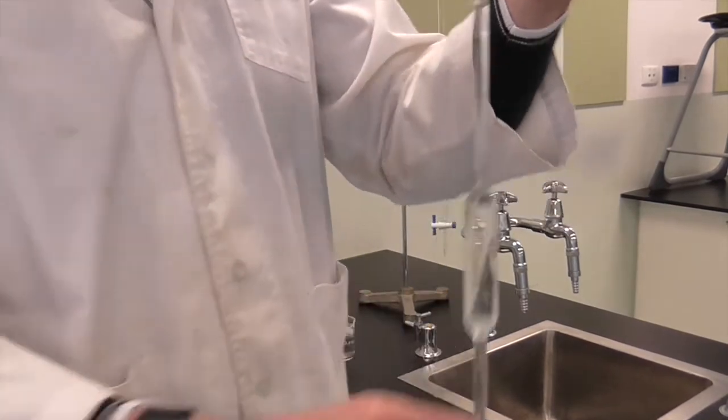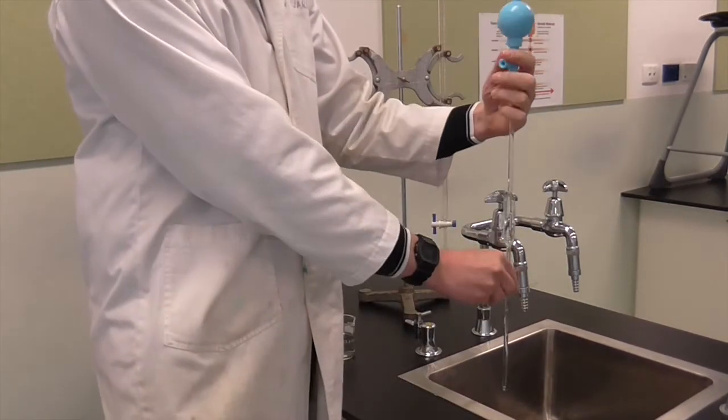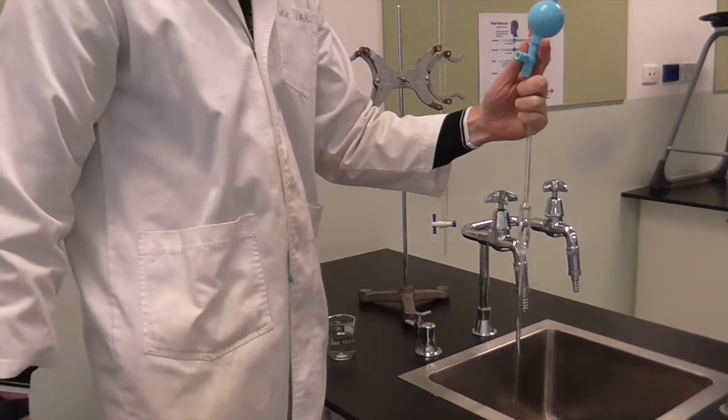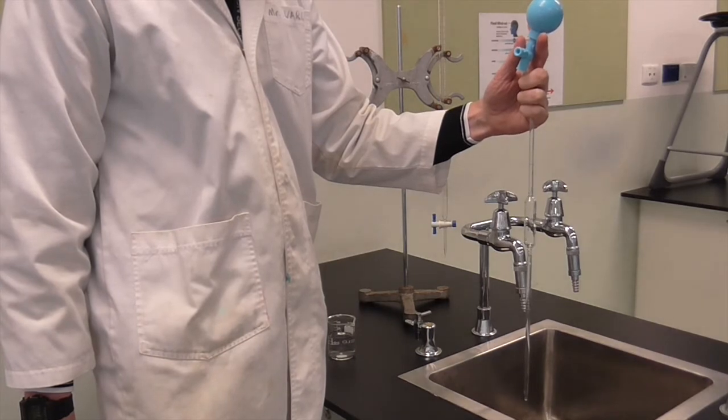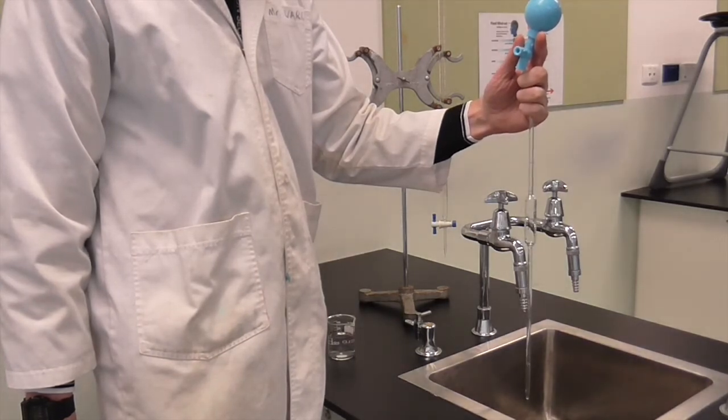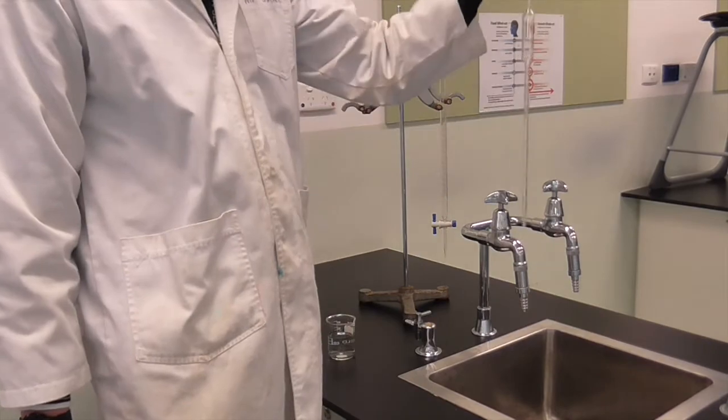Now I'm going to take the pipette over to the sink, remove the pipette filler, and drain out. You need to repeat this process, both rinsing up halfway through the bulb and then above the etched line, at least once with the solution that you're going to place into the pipette. This prevents dilution of that solution.